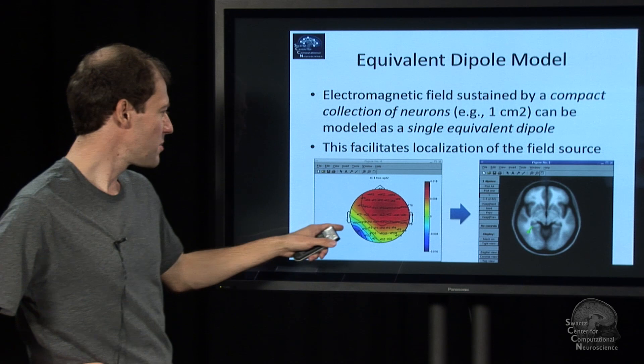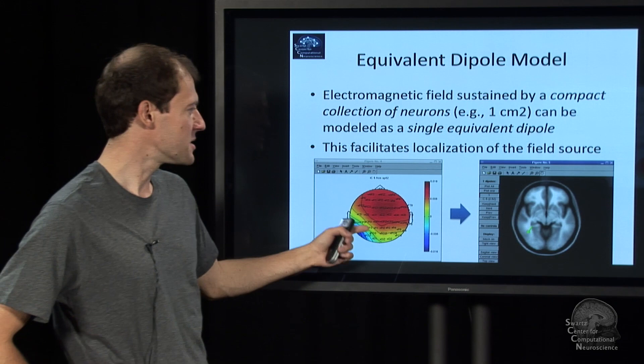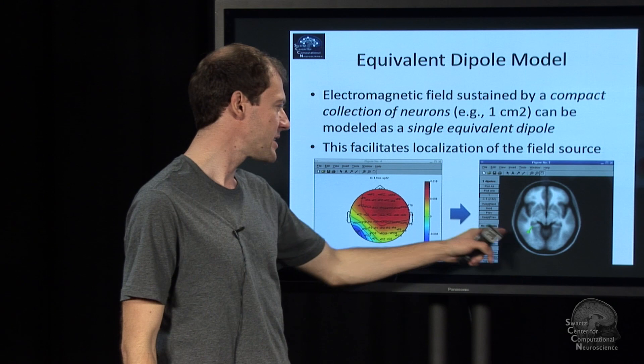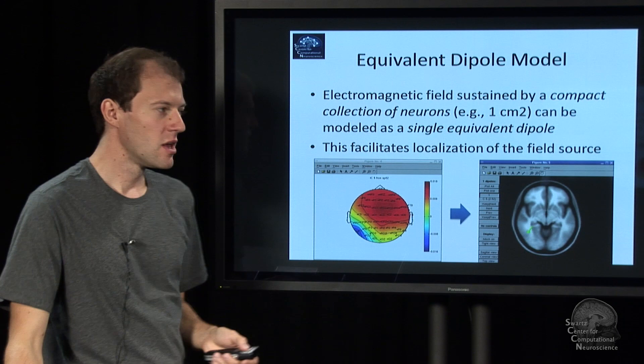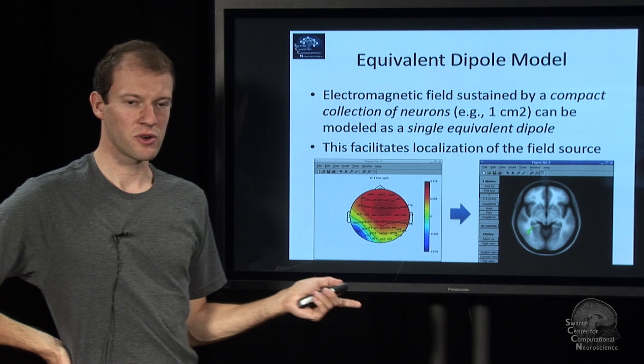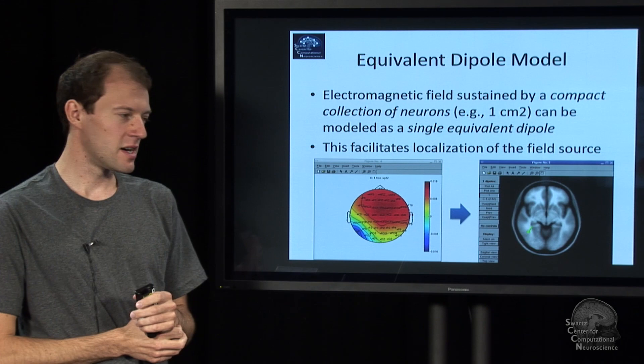And so when you get the projection like this from one source, you can, in principle, fit a model of where the generator lies. And this model is called a dipole because it has two poles. And here's a fit from that data. You see this green thing. That's where we think the generator is. And that's called dipole fitting. It's a way to localize what we observe on the scalp. It's a way to localize parameters of our models, for example.